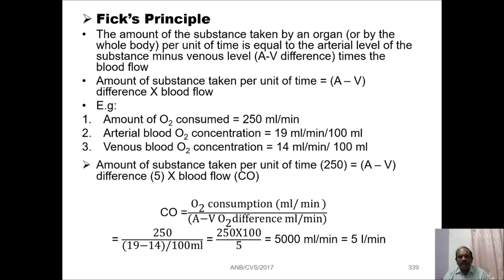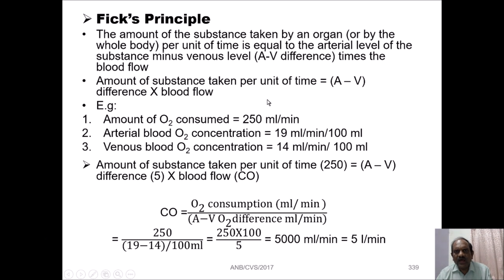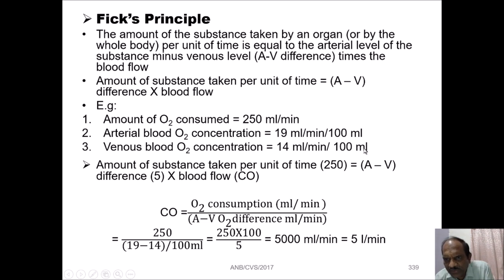The Fick principle states that the amount of substance taken by an organ or by the whole body per unit of time is equal to the arterial level of the substance minus the venous level — what we call the A-V difference — times the blood flow. For example: amount of oxygen consumed is 250 ml per minute; arterial blood O2 concentration is 90 ml per 100 ml; venous blood oxygen concentration is 40 ml per 100 ml.